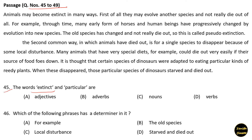Question 45: The words 'extinct' and 'particular' — these words are adjectives. Next question: Which of the following phrases has a determiner in it? Option A: for example, option B: the old species, option C: local disturbance, option D: starved and died out. Option B is the correct answer.